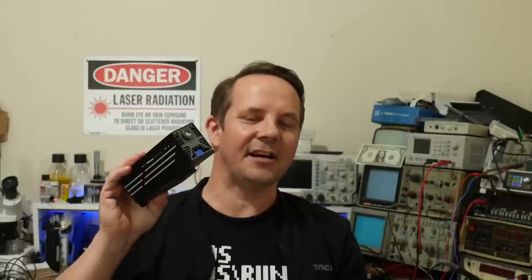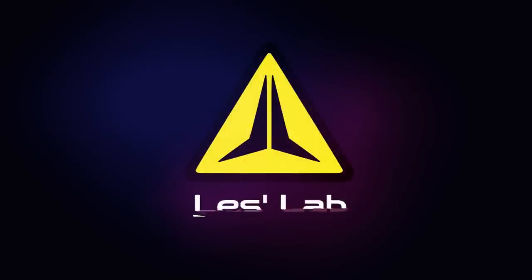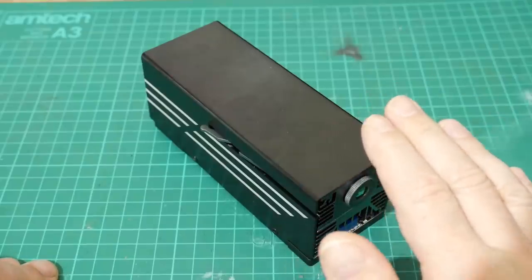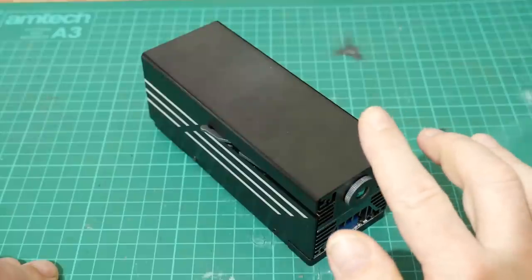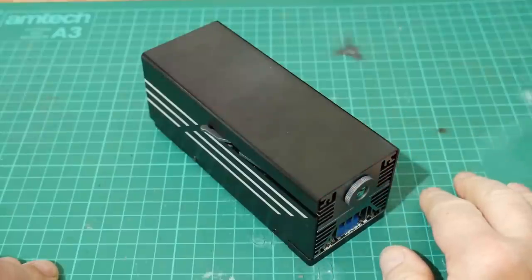In this episode let's measure the light output from this 1064nm laser head from 2trees and convert infrared laser light into green laser light with a non-linear crystal. In a previous episode I reviewed the 2trees TS2 laser engraver. The reason I was so interested in doing this was because it came with this 1064nm laser module.